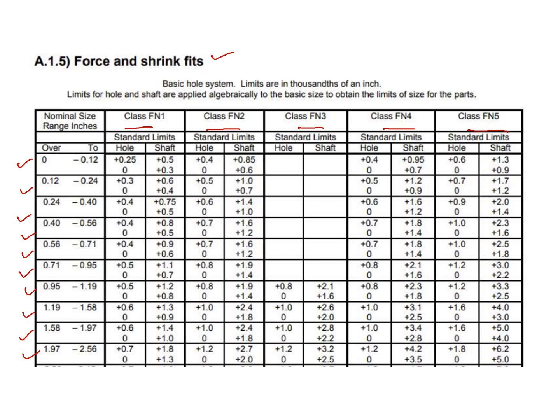As you can see, all these tables are for a basic hole system. For each value — for example, FN1 — there is only one size dimension given for the hole, such as 0.25, and two size dimensions given for the shaft. You can actually see that the hole dimension is fixed and the shaft dimensioning is varying.